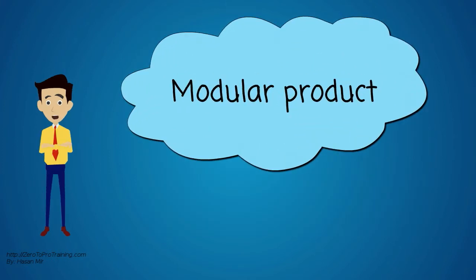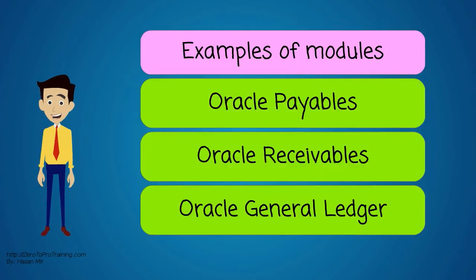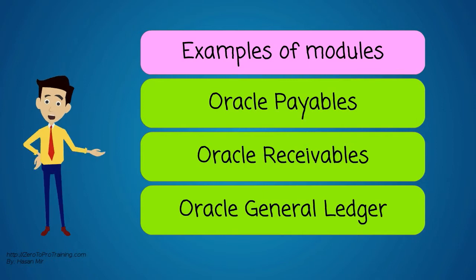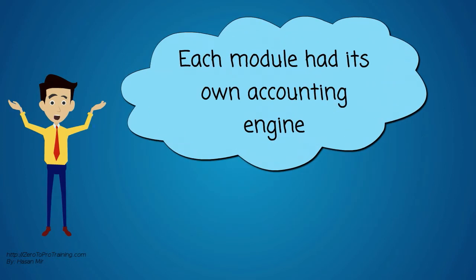Oracle E Business Suite is a modular product. A few examples of modules are Oracle Payables, Oracle Receivables, Oracle General Ledger, etc. In the older version of Oracle E Business Suite, each module used to have its own accounting engine. This model was not very flexible and it required more configuration time.